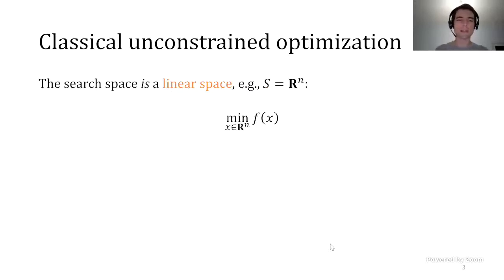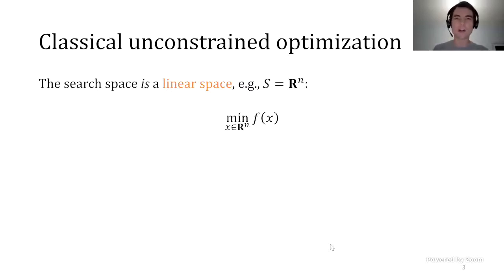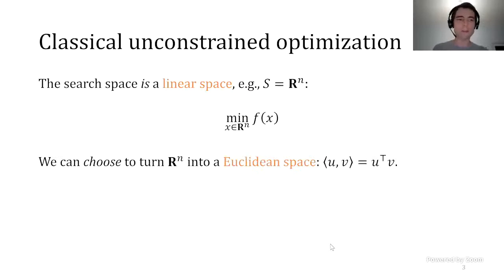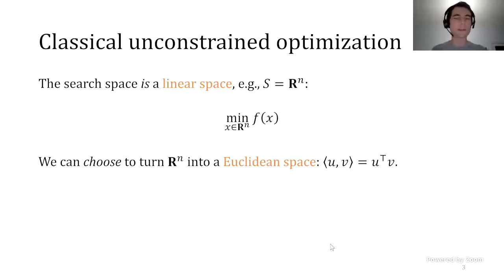For most of our presentation, the situation was that the search space itself was a linear space—let's say R^n, a finite dimensional linear space. And that's just what you happen to be optimizing on. Then the choice that we often make, certainly the case throughout the morning, is that we may decide to endow R^n with additional structure.